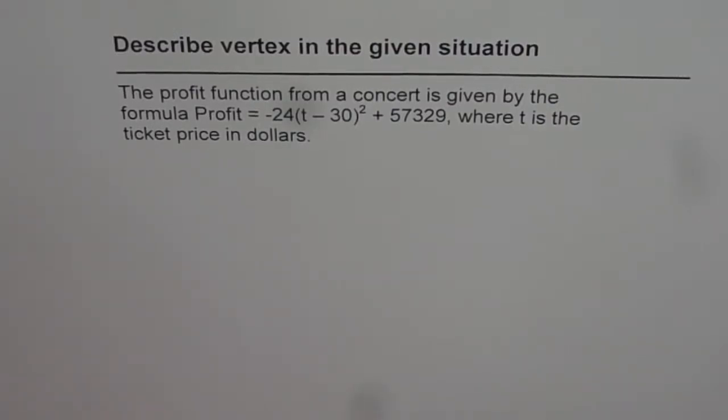Describe vertex in the given situation. The profit function from a concert is given by the formula profit equals minus 24 times (t minus 30) squared plus 57329, where t is the ticket price in dollars.